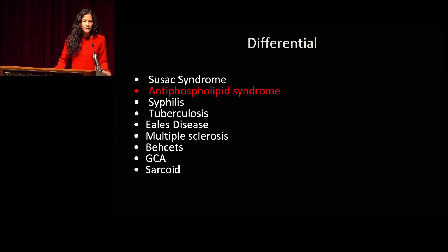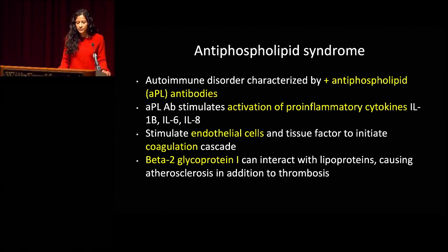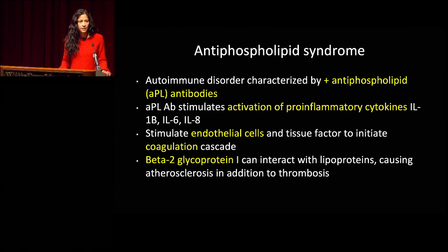On follow-up, the vitreous cell was very minimal with no significant vitreous inflammation. Antiphospholipid syndrome is an autoimmune disorder characterized by positive antiphospholipid antibodies. These antibodies stimulate pro-inflammatory cytokines such as IL-1β, IL-6, and IL-8, which stimulate endothelial cells and tissue factor to initiate the coagulation cascade. When beta-2 glycoprotein is involved, it can interact with lipoproteins, causing atherosclerosis in addition to venous and arterial thrombosis.